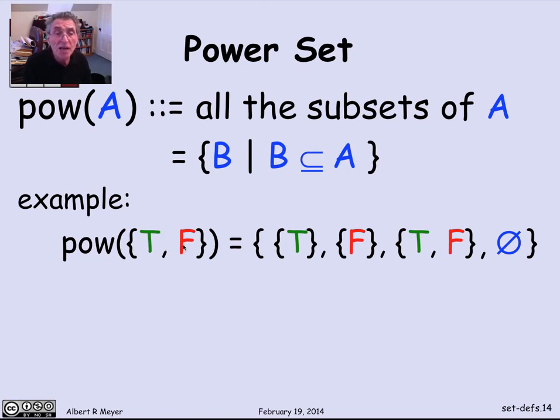So the power set of this two element set is a set that has four things in it, two elements of size 1, one element of size 2, one element of size 0. And that's going to be a general phenomenon that we'll examine more later. How big is the power set of a set?